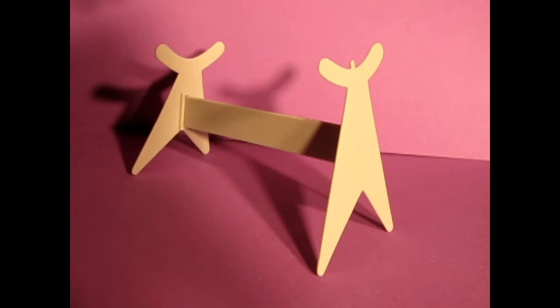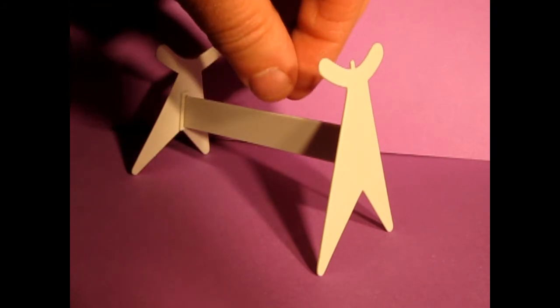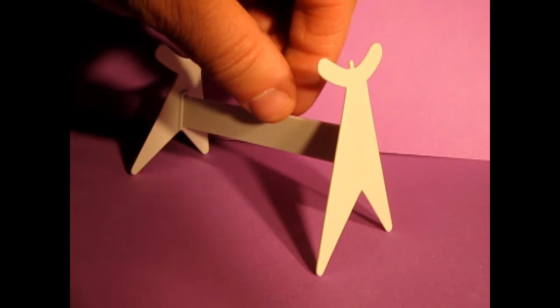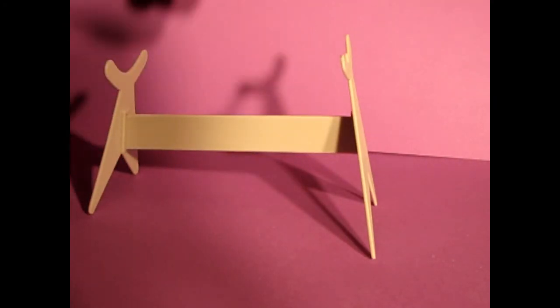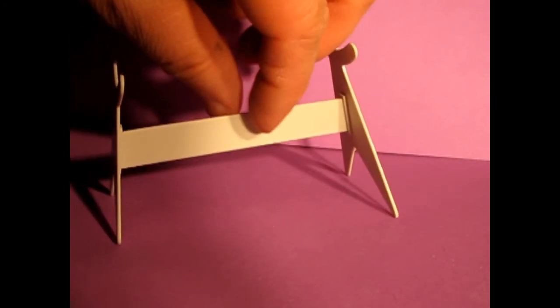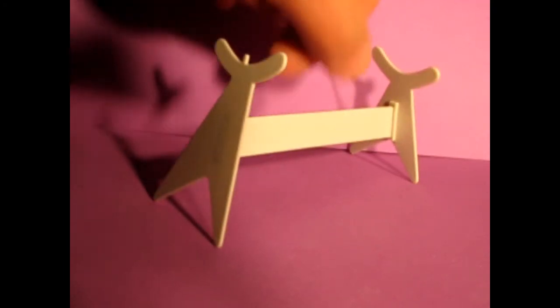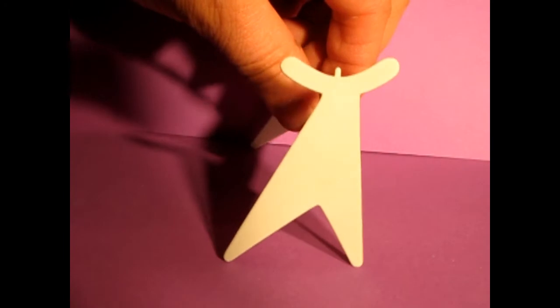So here we have the fully assembled Star Trek Starship Enterprise stand. And these angles are in perfect parallel arrangement to each other. And now the instructions say that you can paint the stand black, although you don't really have to paint the stand if you don't want to.